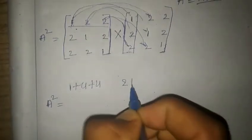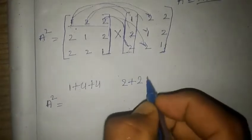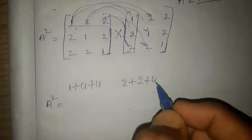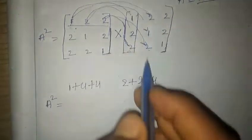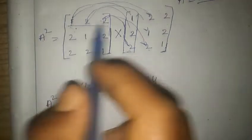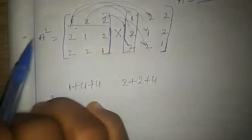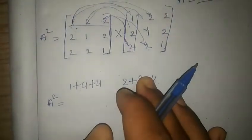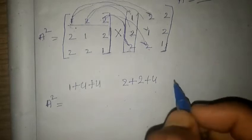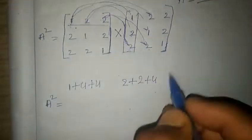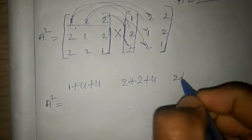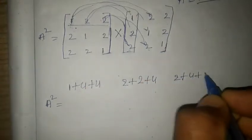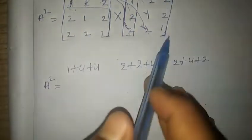For the first row, second column: 1×2 = 2, plus 2×1 = 2, plus 2×2 = 4, giving 8. For the first row, third column: 1×2 = 2, plus 2×2 = 4, plus 2×1 = 2, also giving 8. So first row is complete.